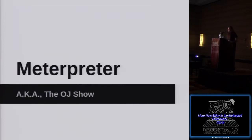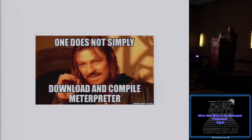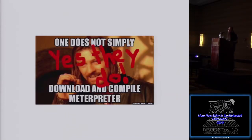Now I want to talk about Meterpreter, which is sort of the OJ show. He worked for us for a while and has been contributing on the open source side. He's made a bunch of really amazing changes — not the least of which is that the Meterpreter repository used to be inside the Ruby repo and was really difficult to compile. Now, all you have to do is have Visual Studio installed, have git installed on Windows, clone the Meterpreter repository, and run make. It works — it does everything.